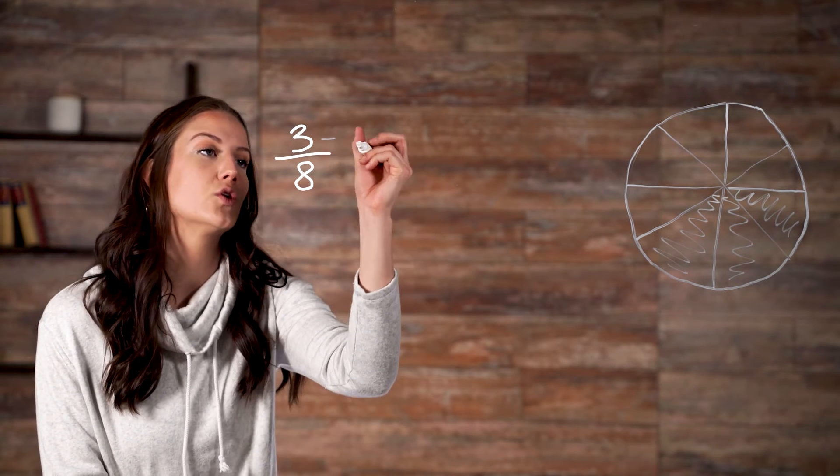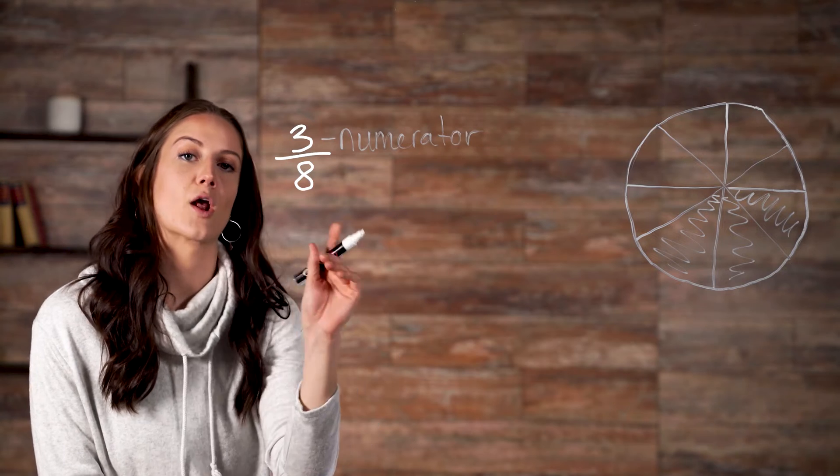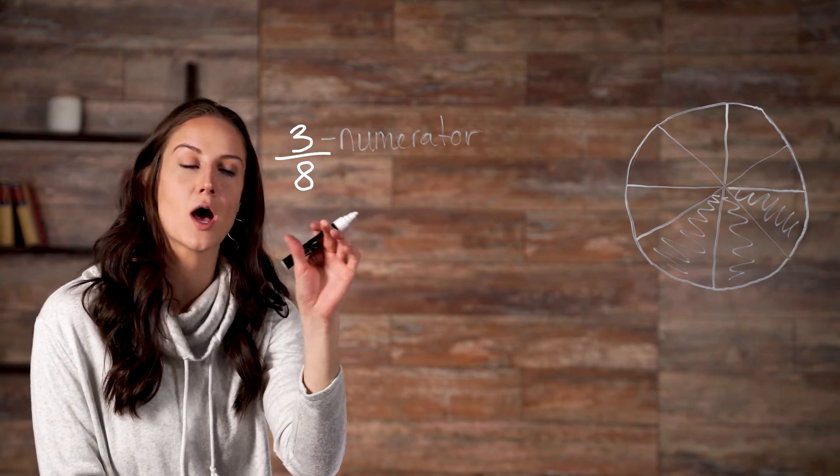That means that three-eighths of our circle is filled in. The top number is called the numerator, and our bottom number is called the denominator.